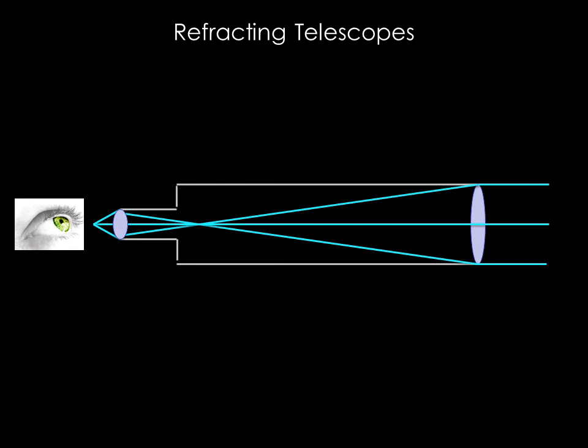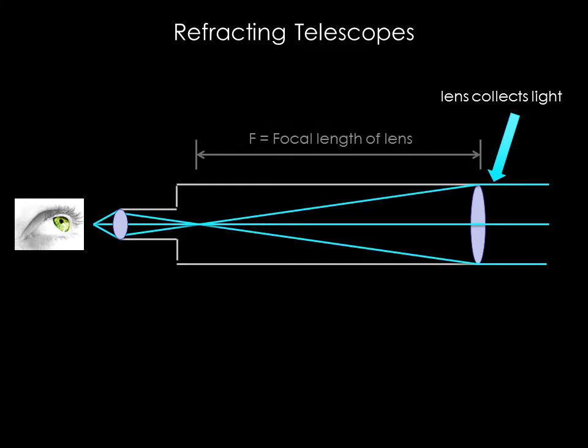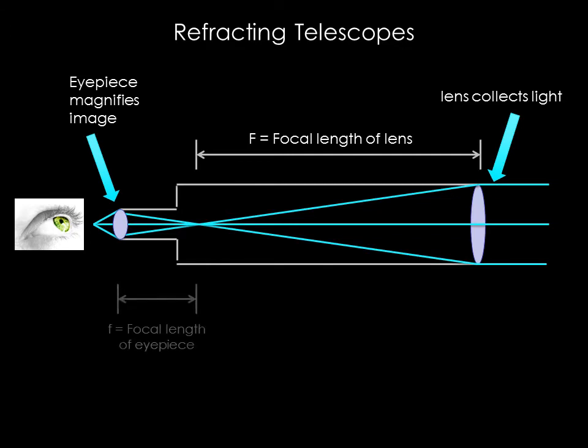Here is a figure showing how a refracting telescope works. The main lens collects the light. The larger the lens, the more light you get. The lens will create an image at the focus. The focal length is the distance from the lens to the focus. An eyepiece is used to magnify the image. The eyepiece has a focal length too. The magnification of any telescope is the ratio of the focal length of the main lens over the focal length of the eyepiece.